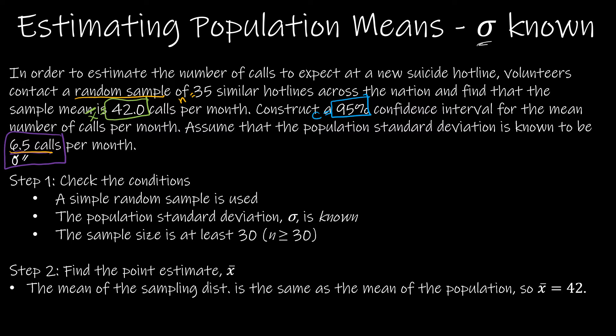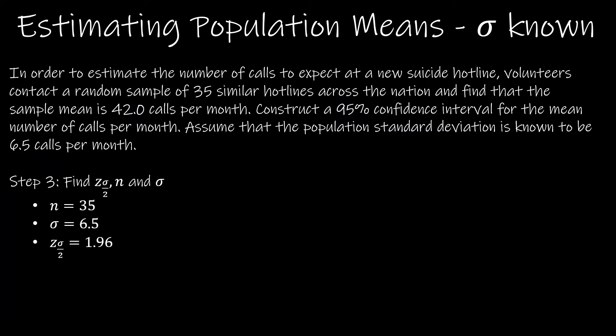Step two, find the point estimate x̄. And again, we've already sort of highlighted that to be 42 calls per month because that's the sample mean. Now we're going to find all of the other values that we need to actually compute our confidence interval. So n is pretty straightforward. We already talked about that being 35. Sigma, we already talked about that being 6.5.